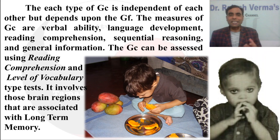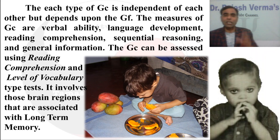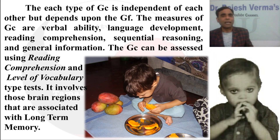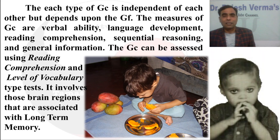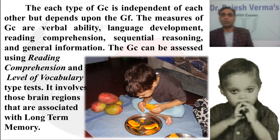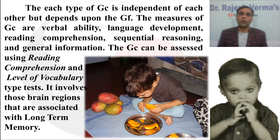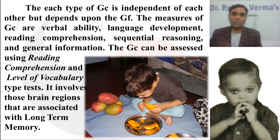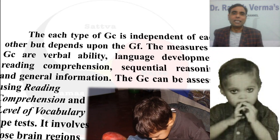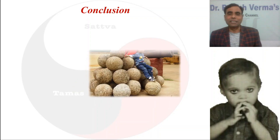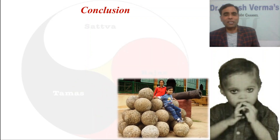This is the basic difference between GF and GC: fluid intelligence is associated with brain regions connected to short-term memory and attention, whereas crystallized intelligence is associated with brain regions connected to long-term memory. That summarizes Cattell's theory of intelligence — fluid intelligence and crystallized intelligence.